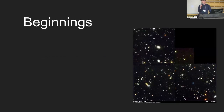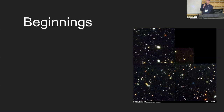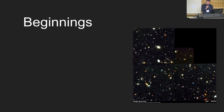Now we continue the romp through cosmic beginnings. This is perhaps the most astonishing photograph in human history — 1995, the Hubble telescope pointed at a tiny patch of dark sky. Almost all those specks are not stars; they are galaxies.